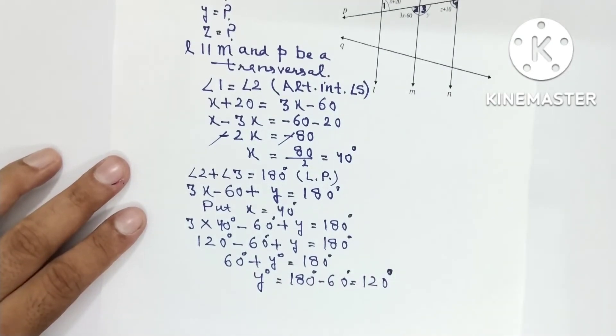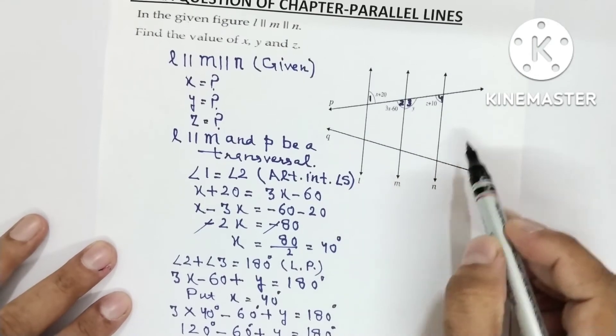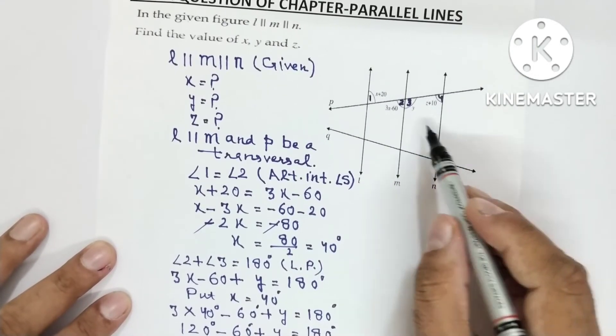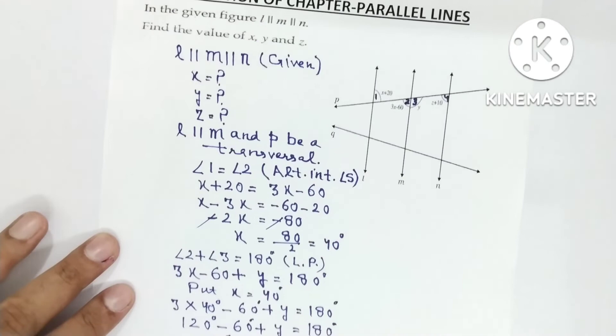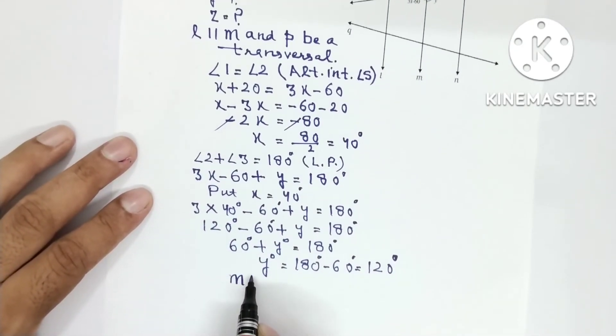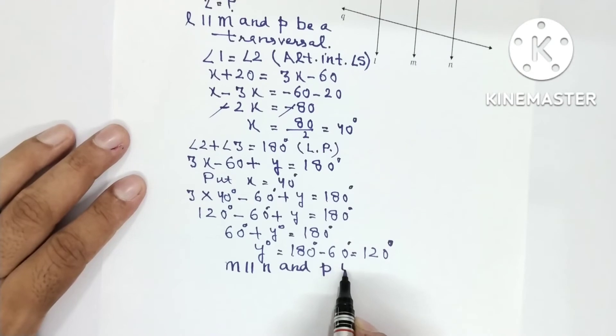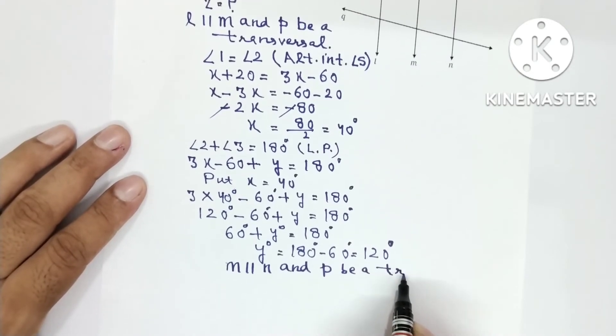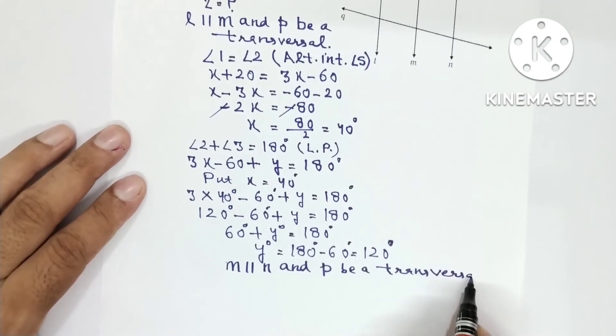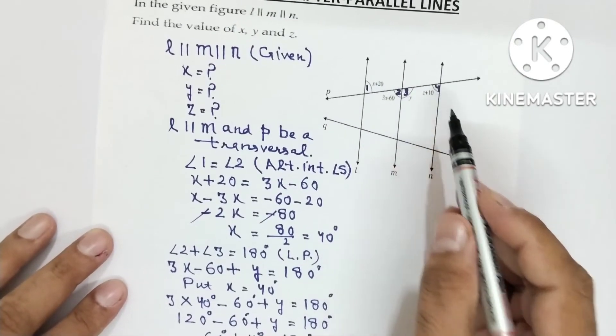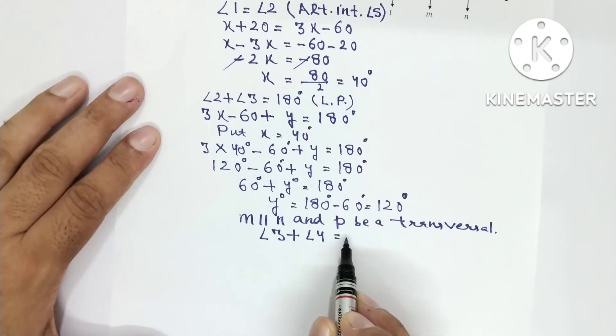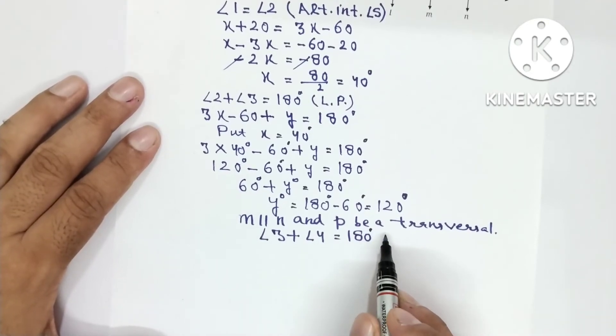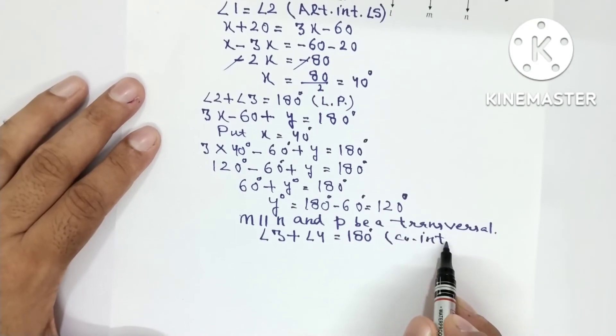अब आपके पास X भी आ चुका और Y भी आ चुका. अब आप ध्यान से देखो, M or N parallel है, right? M is parallel to N and P is transversal. तो 3 or 4 कैसी angle है? They will be co-interior angles. So we will write here, M is parallel to N and P be a transversal. So this angle 3 and 4 they are co-interior angles. Co-interior का sum क्या होता है 180. Angle 3 plus angle 4 is equal to 180 degree and the reason co-interior angles.